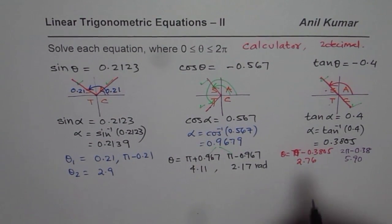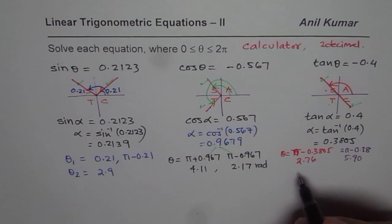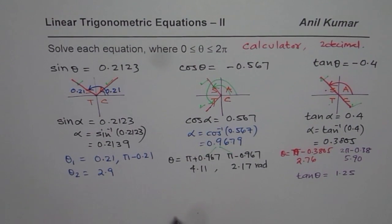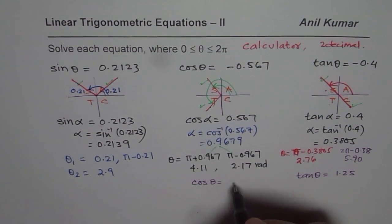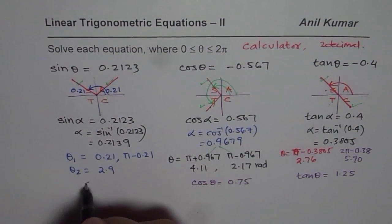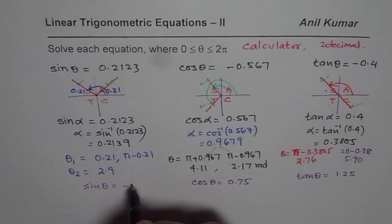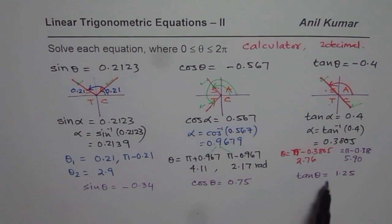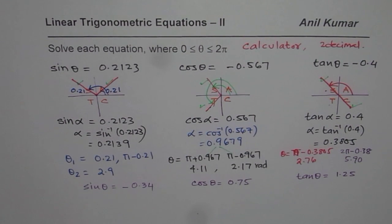Now, for you, I will give you some questions which you can try. You can try tan θ = 1.25 and we can have cos θ = 0.75 and sin θ = -0.34. You write down solutions for these trigonometric equations, applying the principles which you learned in this particular video. Let us move on and in the next video, we will learn how to find solution of trigonometric equations, rather the exact solutions of trigonometric equations, using special triangles. Thank you.